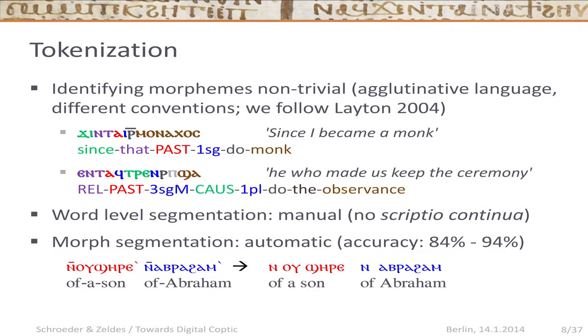The segmentation into these big blocks is done manually, even though the manuscripts are actually in scriptio continua — there are no spaces in the manuscripts per se. There are some diacritics, like an apostrophe-like thing that sometimes corresponds to these complex word forms but not always. It turns out that no researcher actually transcribes in scriptio continua, so we haven't invested efforts in doing that automatically. We do have an automatic morpheme segmentation script which tries to break up the different colored blocks.